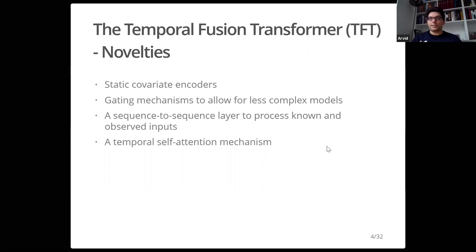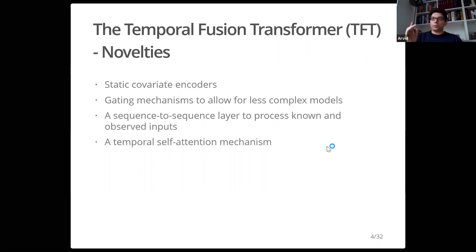What's new in this particular paper? First, static encoders feed static information in at every step. They use a gating mechanism that allows starting with a fairly complex model, but during training the model has the freedom to relax to a simpler model. There is a sequence-to-sequence layer that allows local temporal information to pass through — a strong layer for local temporal information — and then an attention mechanism that is temporal in nature with a longer look-back, combining short-range and long-range look-backs.